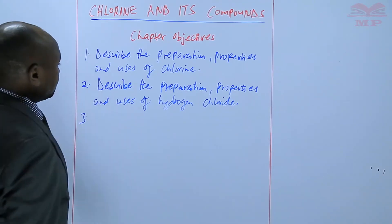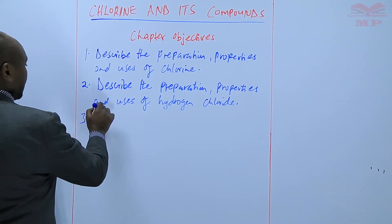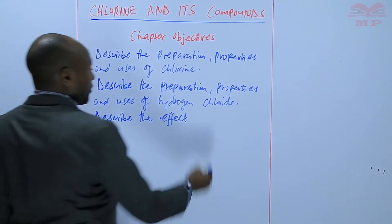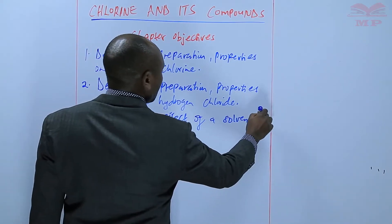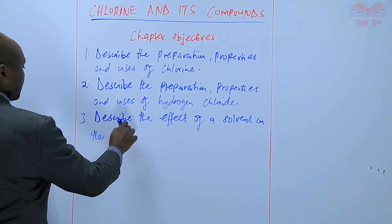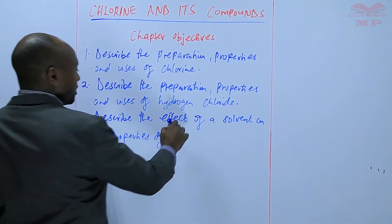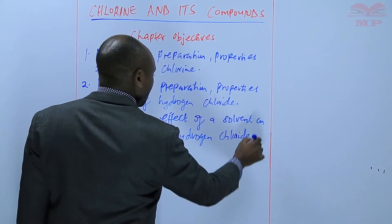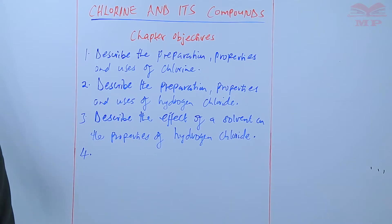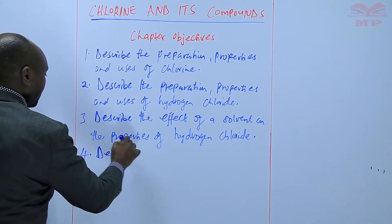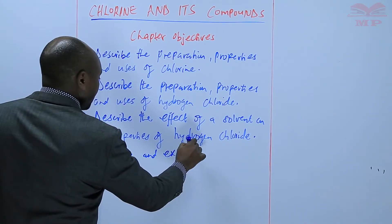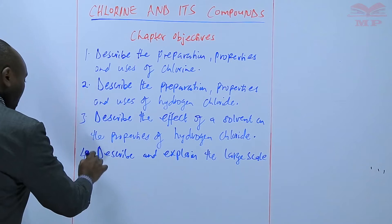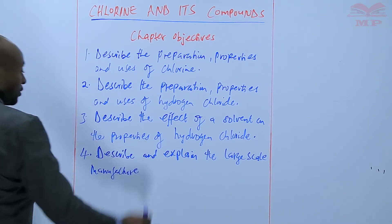Objective number three is to describe the effects of a solvent on the properties of hydrogen chloride. Number four is to describe and explain the large-scale manufacture of hydrochloric acid.